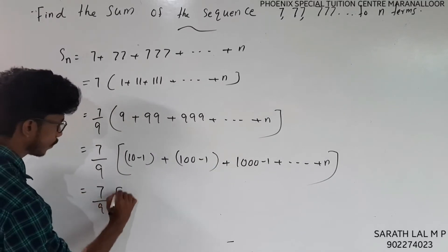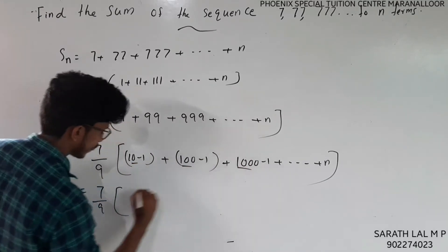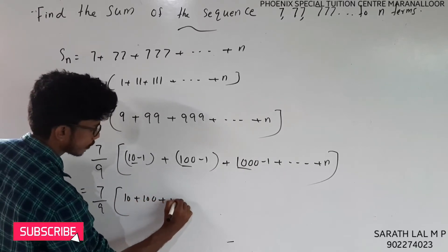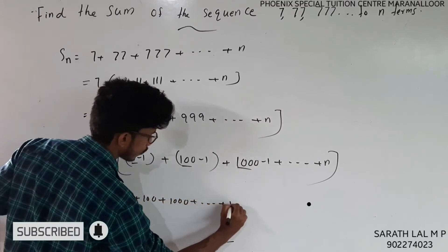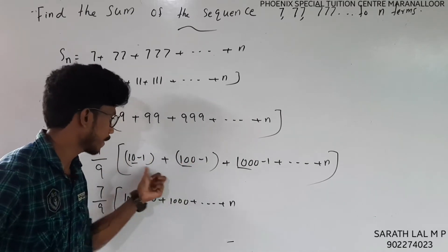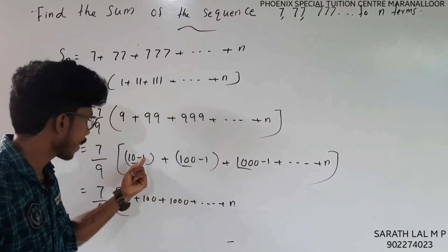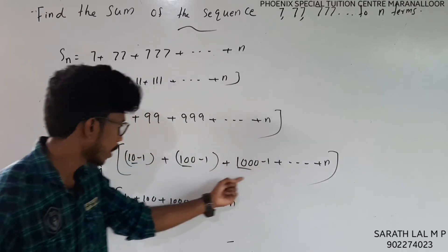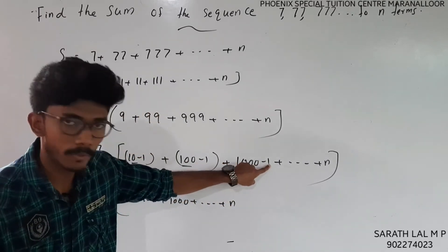So we arrange this as 7 by 9 times the sum of (10 minus 1) plus (100 minus 1) plus (1000 minus 1), and so on. That gives us 7 by 9 into the sum of powers of 10 minus n.